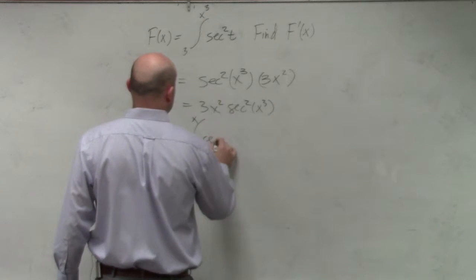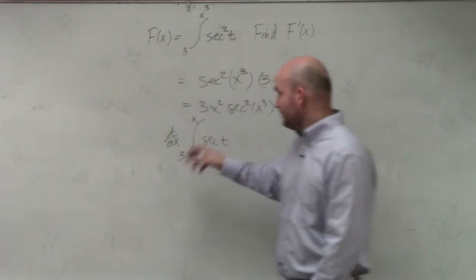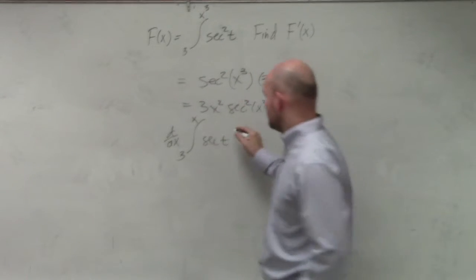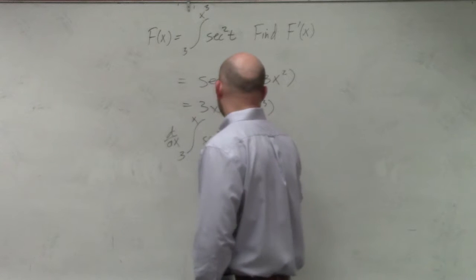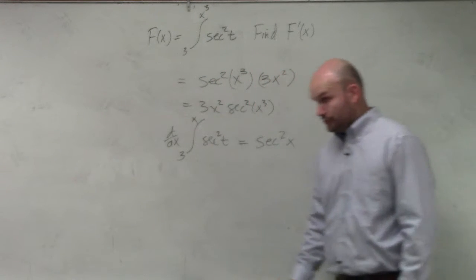So if I did this, if I said 3 over to x of that, secant squared, then we know that the answer would just be secant squared of x. Do you agree with me? Yes.